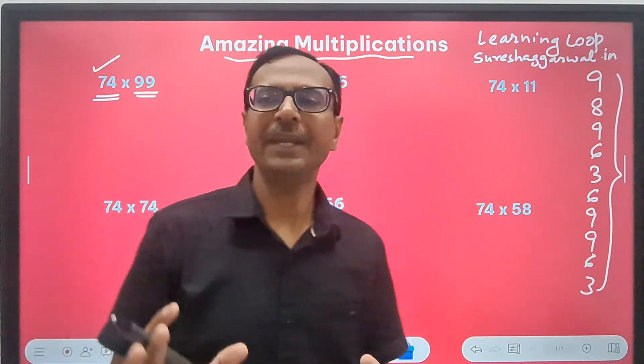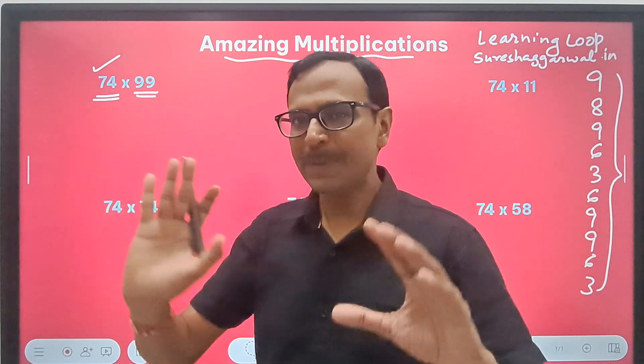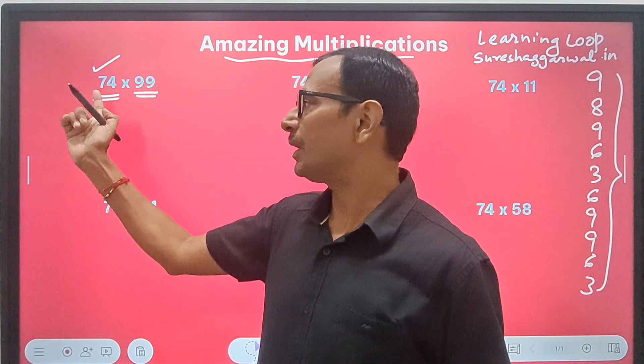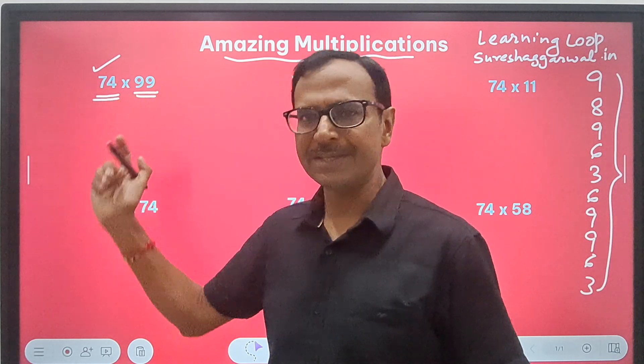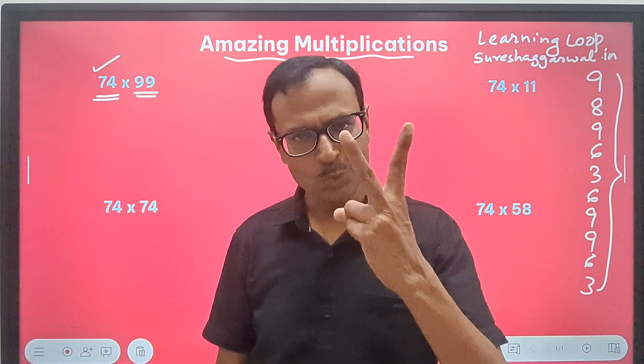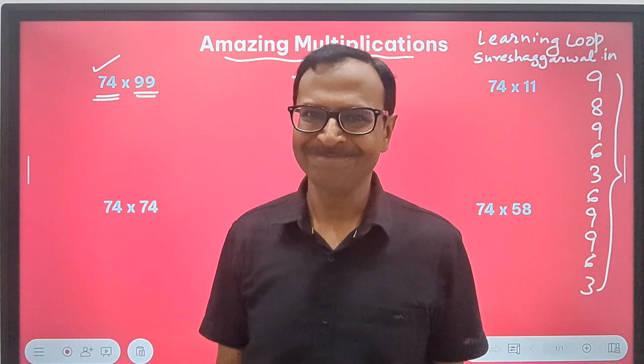Whenever you need to multiply a number by 9s, especially a number having equal number of digits as compared to the number of 9s in the number. So, 2 digits, 2 nines. Very easy. 2 seconds, enough.